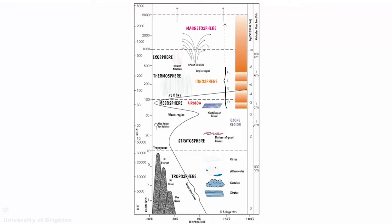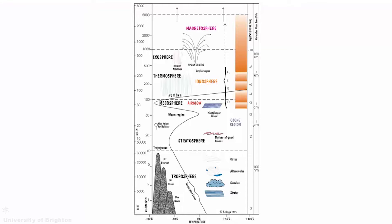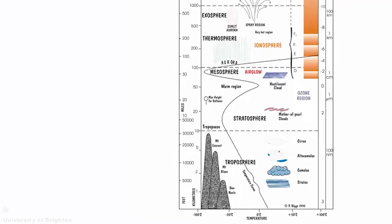The Earth's atmosphere has a distinct layered structure, divided into regions by virtue of its temperature profile. Starting at the Earth's surface, the first region of the atmosphere is the troposphere, the region in which we live. It interacts with the Earth's surface, and into it the vast majority of natural and man-made emissions occur. Bounded by the tropopause, the troposphere is the densest part of the atmosphere, turbulent and characterised by a gradually decreasing temperature profile with altitude.